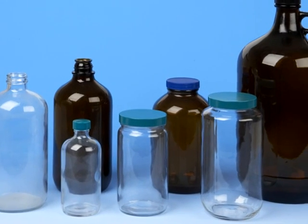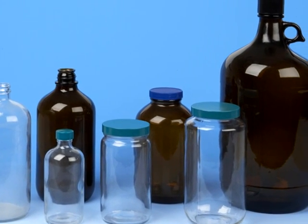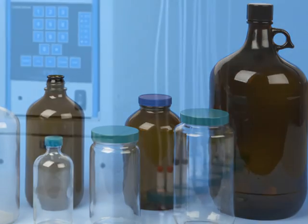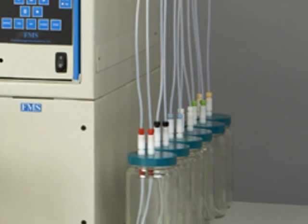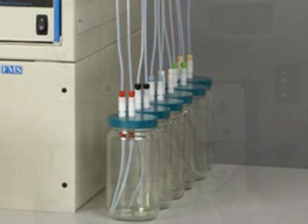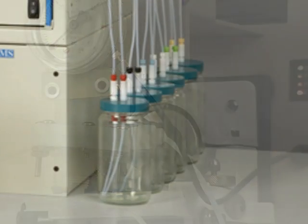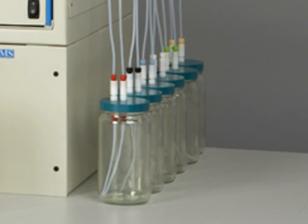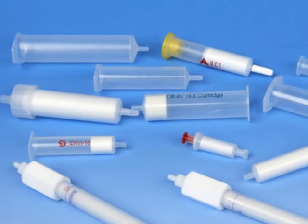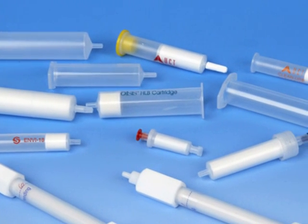With the PowerPrep SPE, you can run samples from 2 milliliters to 8 liters with the same unit. The PowerPrep SPE system design allows for various cartridges, column sizes, and chemistries, giving the end-user flexibility to use the same unit for all sample types.